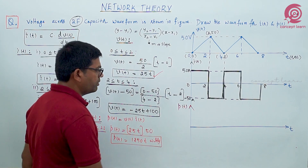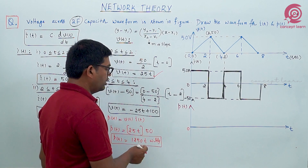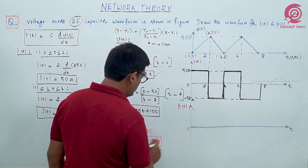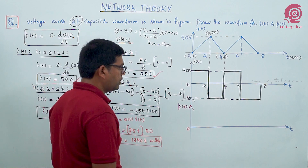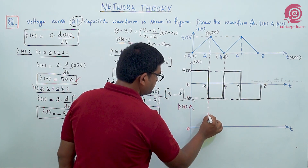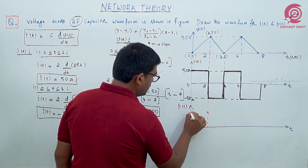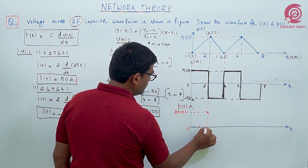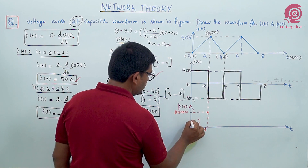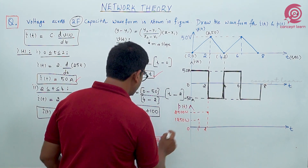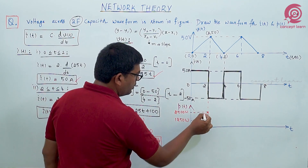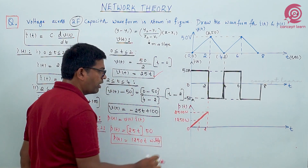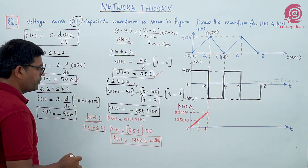Multiplying, we get p(t) = 1250t watts in the interval 0 to 2. At t = 0, power is 0. At t = 1, it is 1250 watts. At t = 2, it becomes 1250 times 2 equals 2500 watts. This looks like y = mx — a straight line with slope 1250 — so the waveform rises linearly to 2500 watts at t = 2.